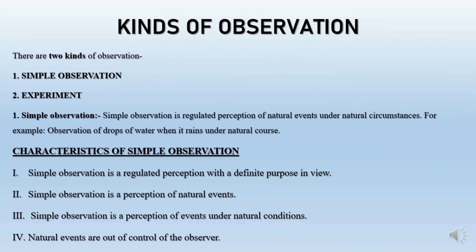What is observation? Observation is a regulated perception. There are two kinds of observation: one is simple observation and the other is experiment. Simple observation is the regulated perception of natural events under natural circumstances. For example, observation of drops of water when it rains under a natural course is a simple observation.